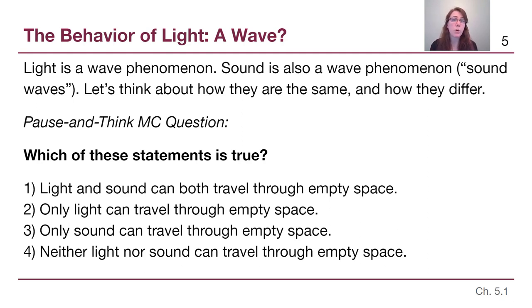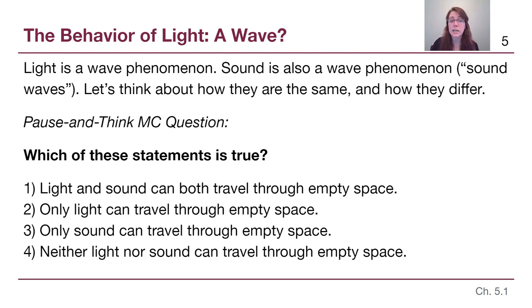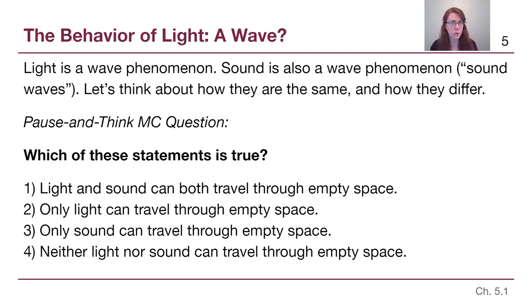Here's a pause-and-think question: which of the four statements below is true? Only one of them can be true, so decide which one makes the most sense. One thing we should be able to do quickly is throw out options that don't allow light to travel through empty space. We can see the sun, we can see the moon when sunlight is shining from it, we can see distant stars — that means light is traveling through empty space. So the only reasonable options are one and two.